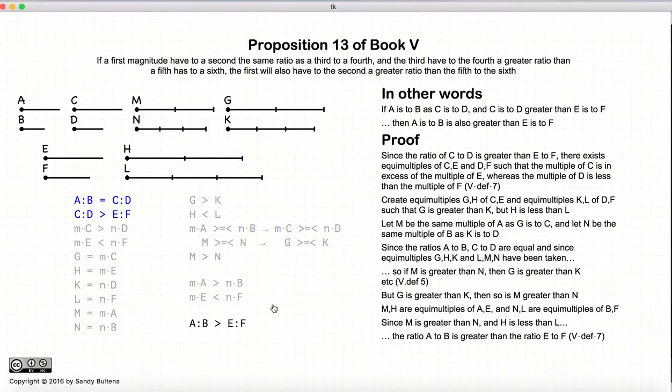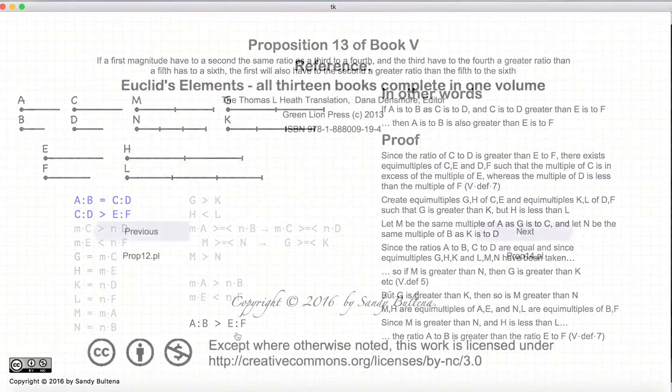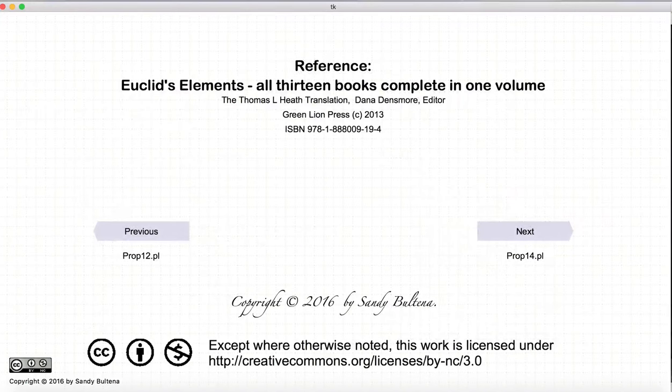So ultimately, long-winded, if a to b is equal to c to d and c to d is greater than e to f, a to b is also greater than e to f. And that concludes this video presentation. To see the next presentation, just click the next button.